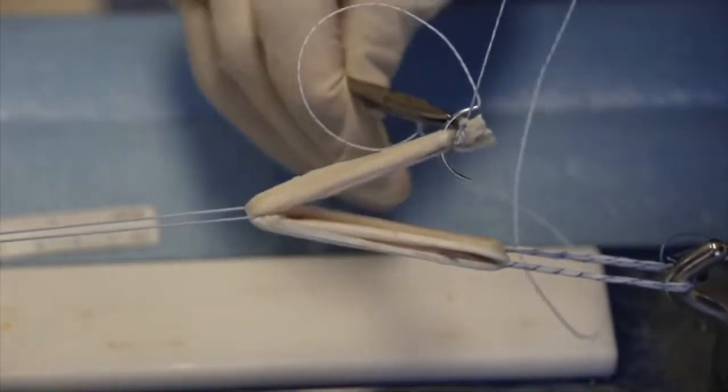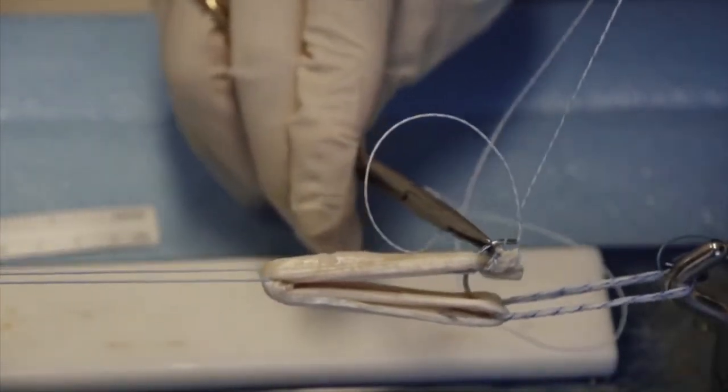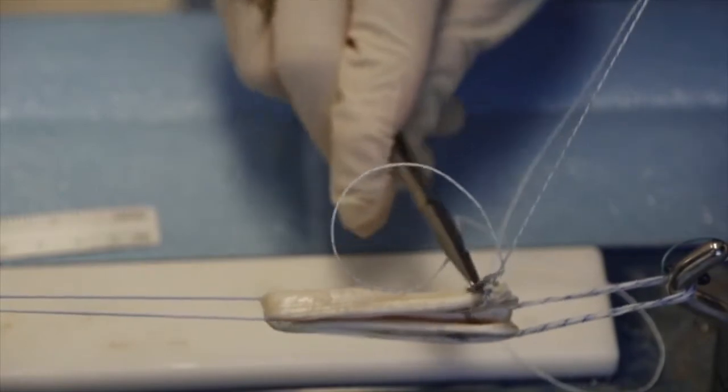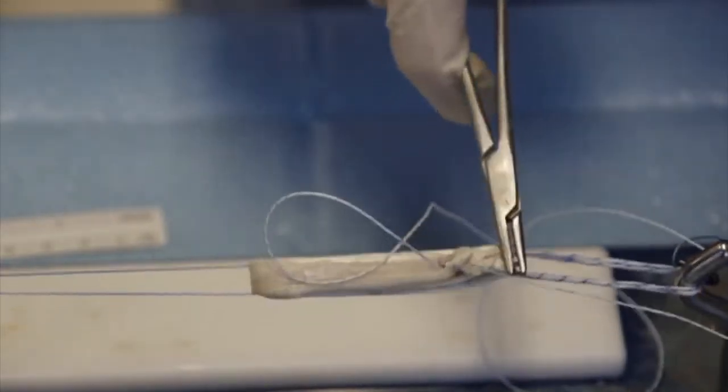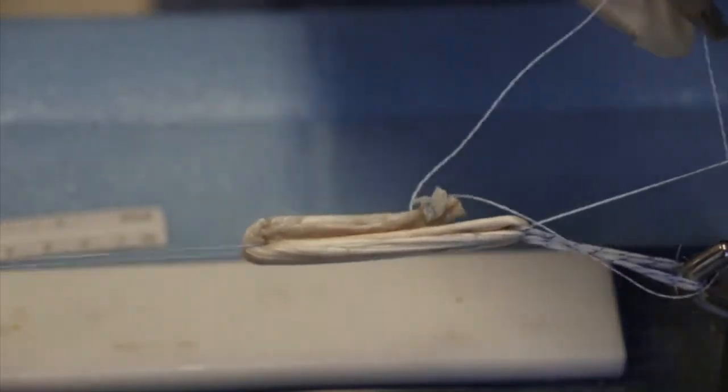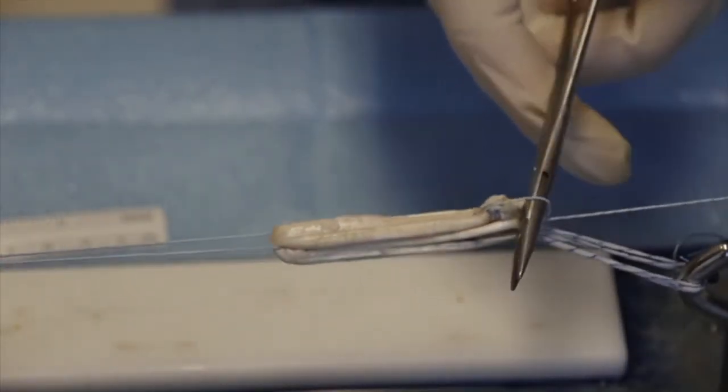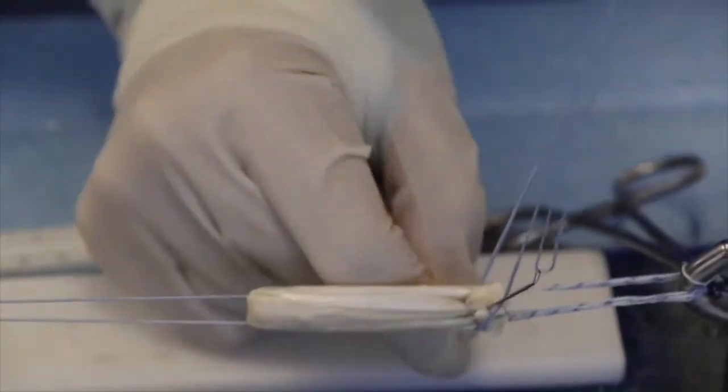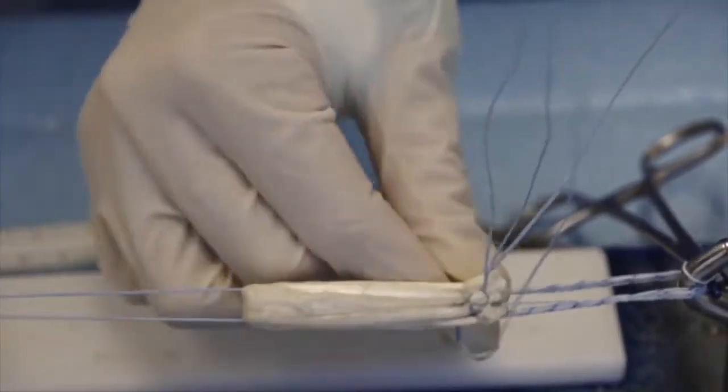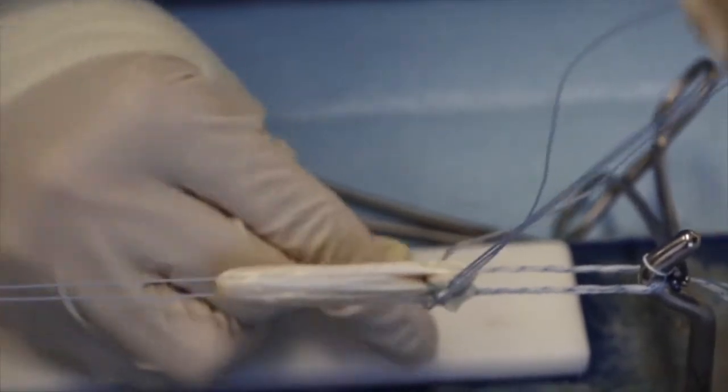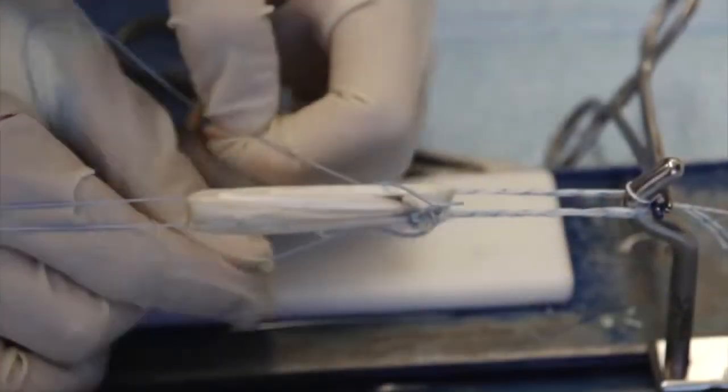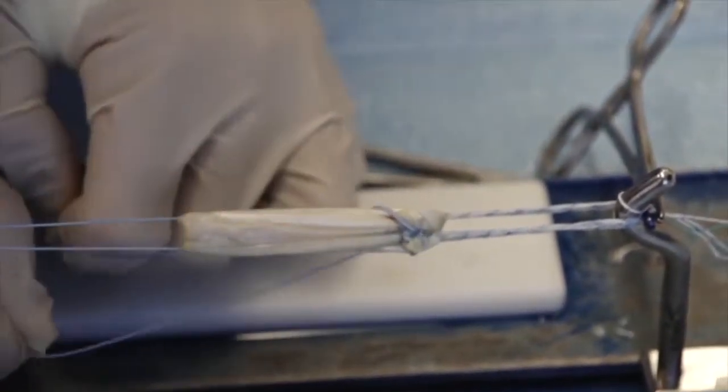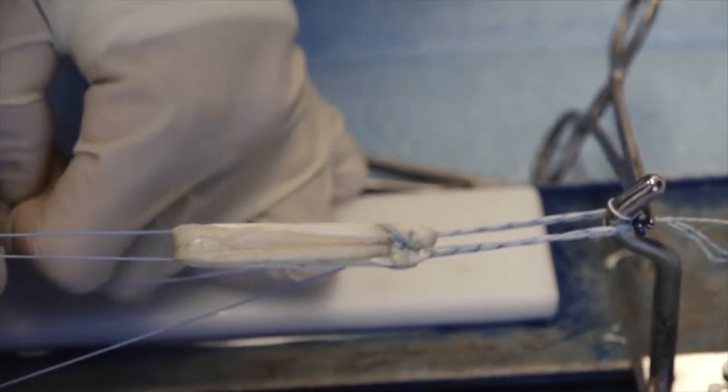The needle is passed through the proximal part of the graft stump, grabbing and tensioning the distal part with a non-absorbable suture. The four strand graft is then whip stitched with fiber loop from proximal to distal.